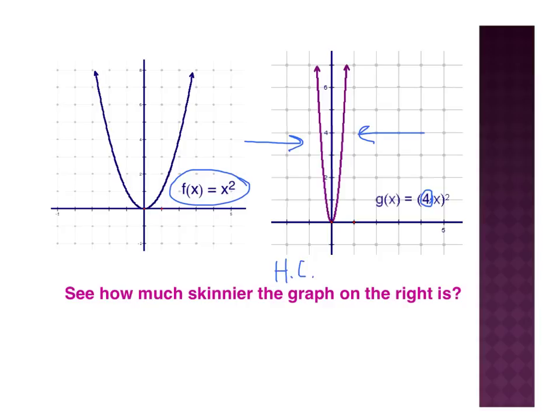Now we have to think about our factor. This 4 is what we're multiplying by, but remember we have to think opposite when talking about horizontal transformations. So we have a horizontal compression by 1/4. Our factor has to be between 0 and 1 for a compression, so since it's a horizontal compression, it must be by a factor of 1/4.